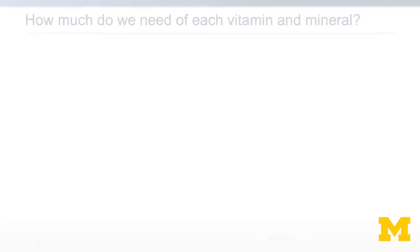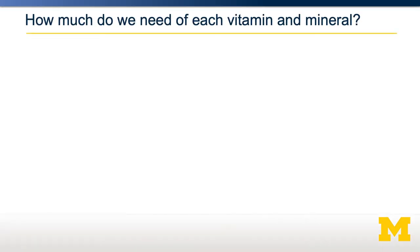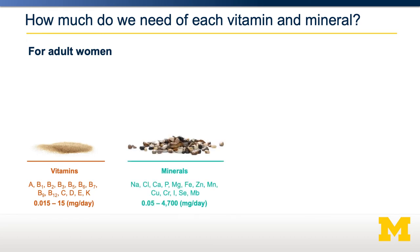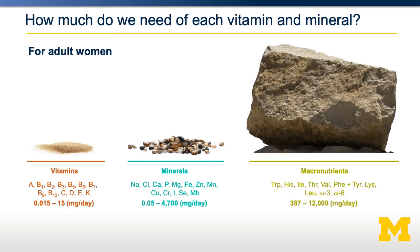So how much of these do we need in relative terms? Vitamins are required in very small amounts — generally less than 15 milligrams per person per day for an adult woman. Minerals, especially the major minerals, are required in much larger amounts; for example, the recommendation for sodium and potassium is about 4.7 grams per day. For macronutrients — the amino acids and lipids — we require much more, up to 12 grams per day depending on the amino acid or lipid.